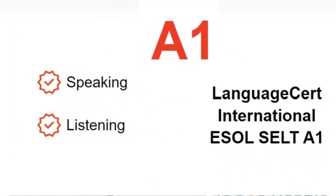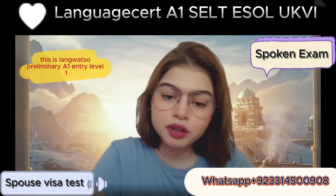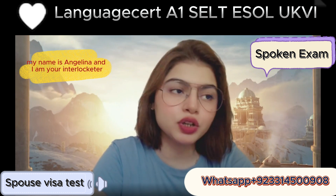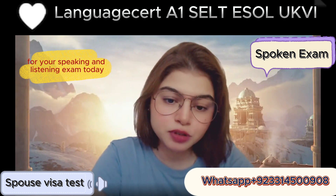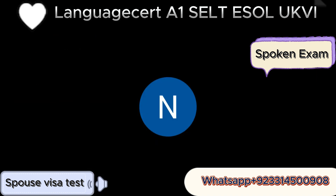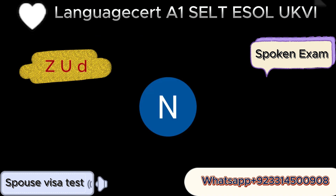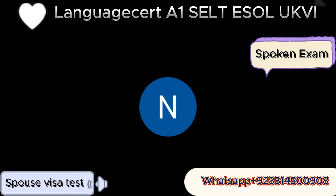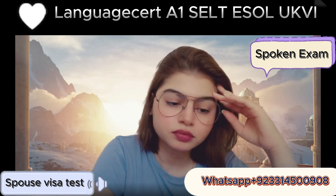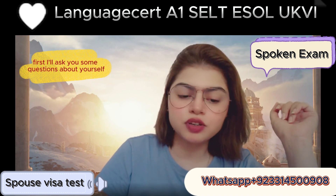LanguageCert International ESOL CELT A1 Speaking and Listening for family visa and spouse visa. This is LanguageCert Preliminary A1 Entry Level One. My name is Angelina and I am your interlocutor for your speaking and listening exam today for your spouse visa. Are you Nikki Gupta? Yes, I'm Nikki. Can you spell your family name for me please? Yes, of course — G-U-P-T-O. Which country are you from? I am from India. Thank you. Now the exam begins. First I'll ask you some questions about yourself.